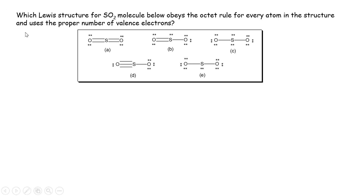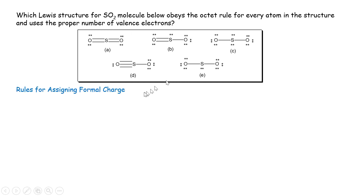Which Lewis structure for the sulfur dioxide molecule below obeys the octet rule for every item in the structure and uses the proper number of valence electrons? We have five choices here.